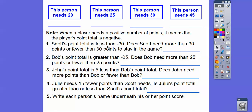Scott's point total is less than negative 30. Think of a number line — Scott is less than negative 30, which is further to the left. So he's going to need more than 30 points to get back in the game. Which one needs more than 30 points? This one needs 45 — that's Scott, because that's more than 30 points.